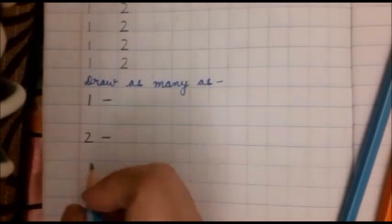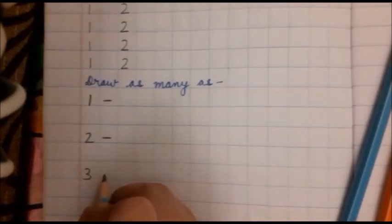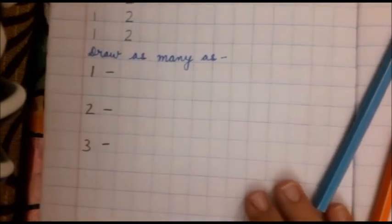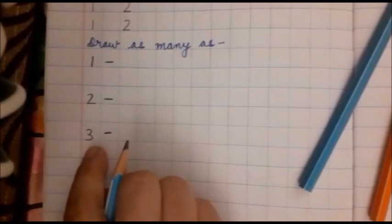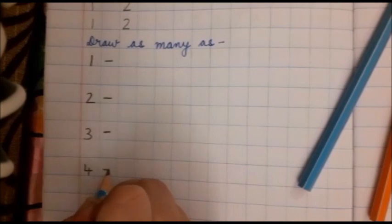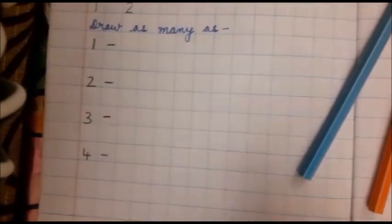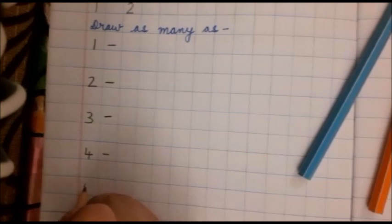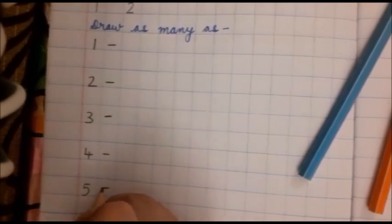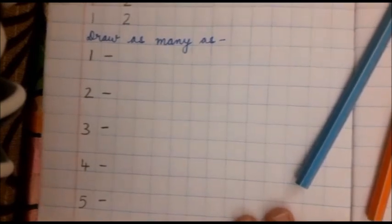Same way, 3, dash. Then again, I will leave one box. 4 dash, 4 dash and 5 dash. Okay? Now, the activity is,